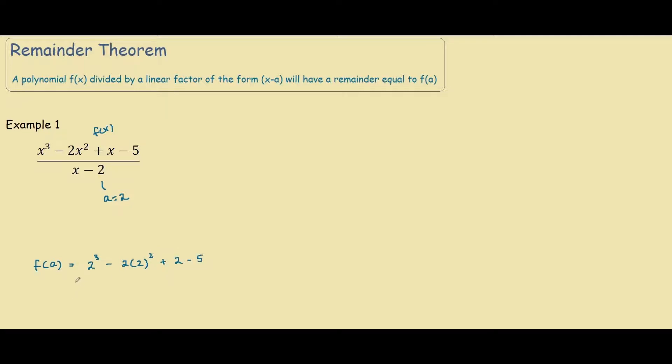And if you work this out it would be 8 minus 8 plus 2 minus 5, which equals to negative 3. So if you were to work out this example using long division you would get a remainder of negative 3.